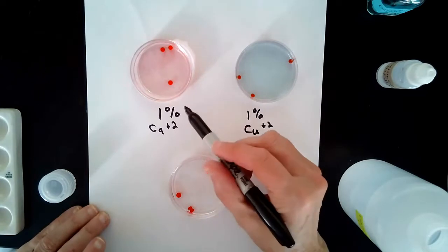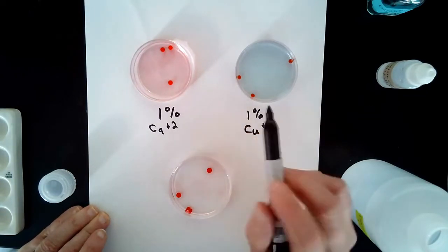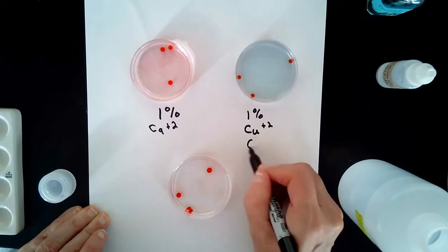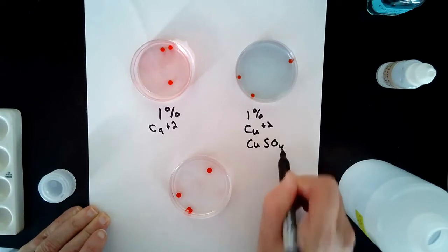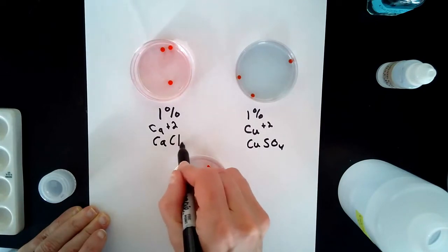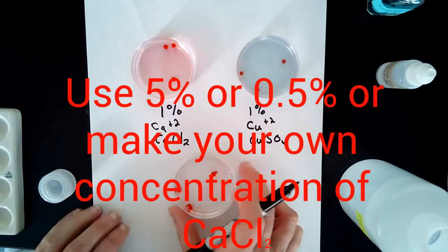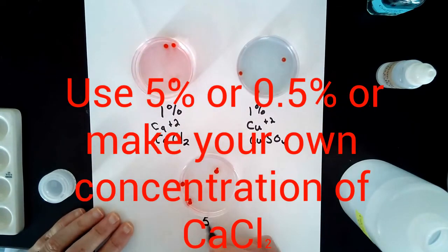I've chosen to make alginate beads with one percent calcium chloride, one percent copper sulfate, and I also used—sorry, it's supposed to be a two—I also used five percent calcium chloride.